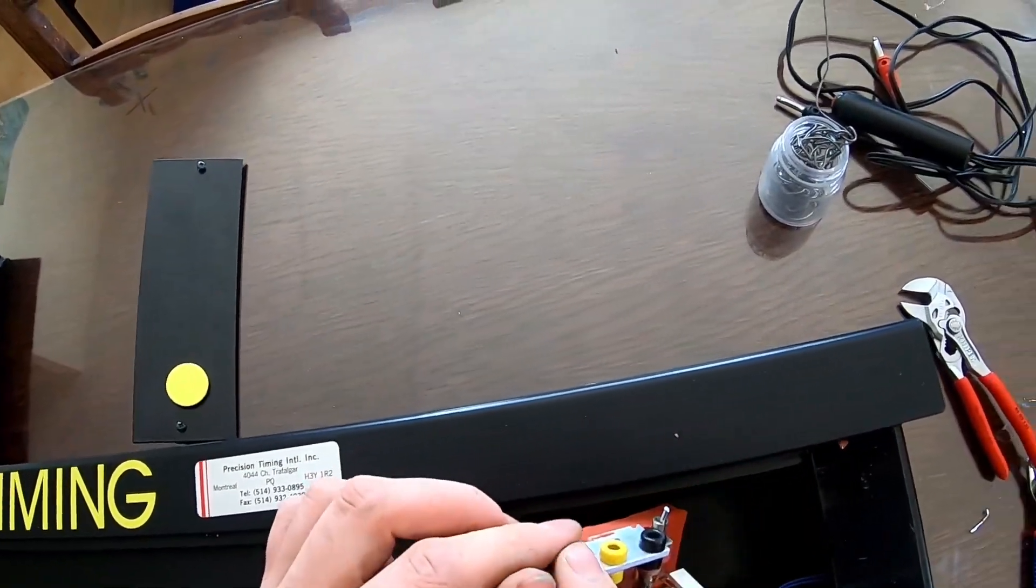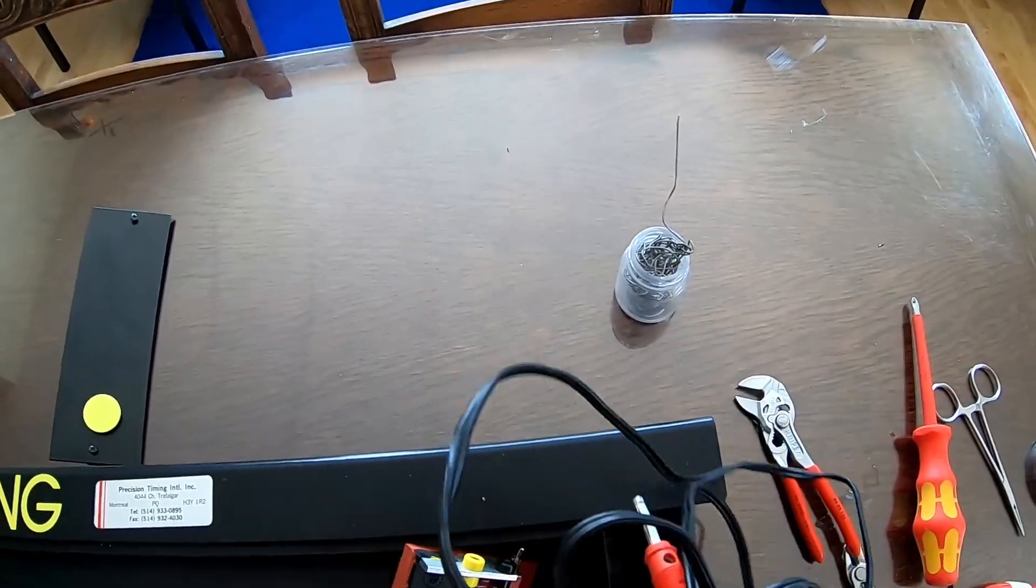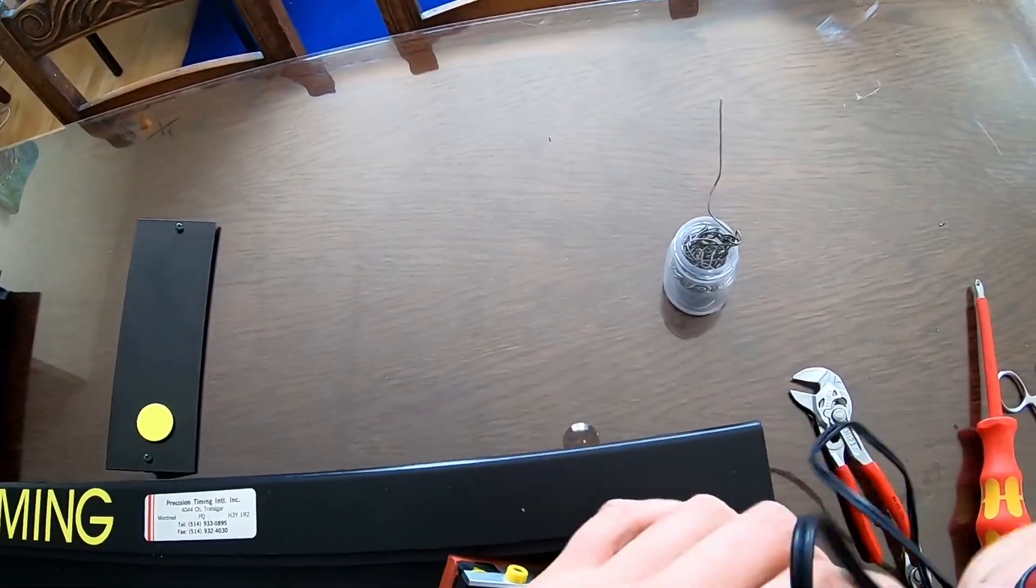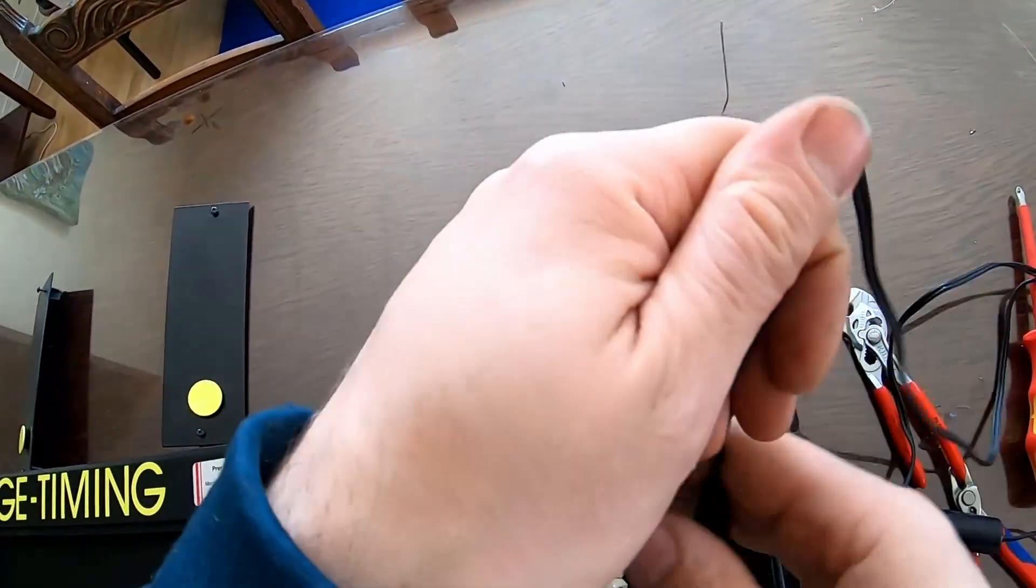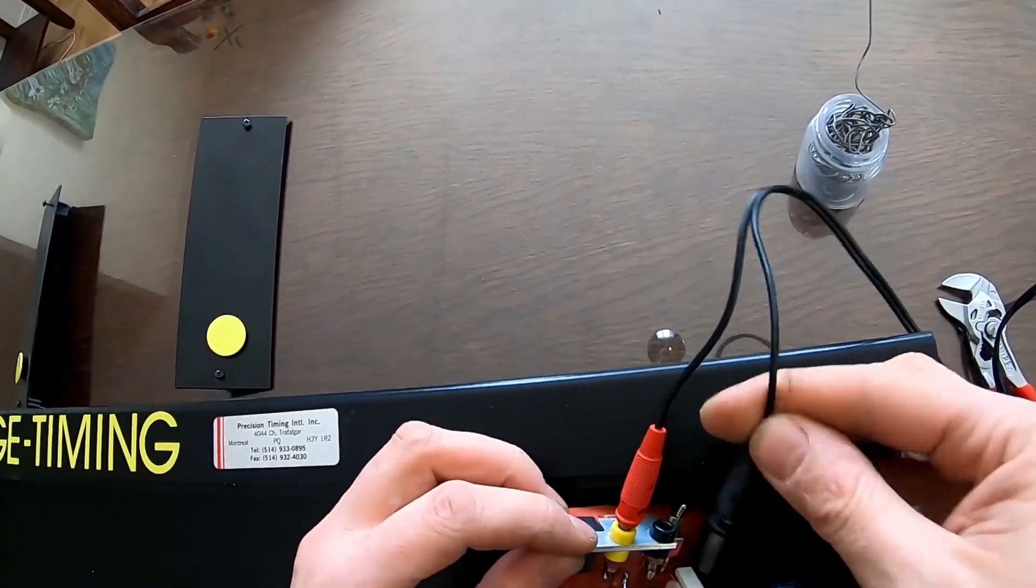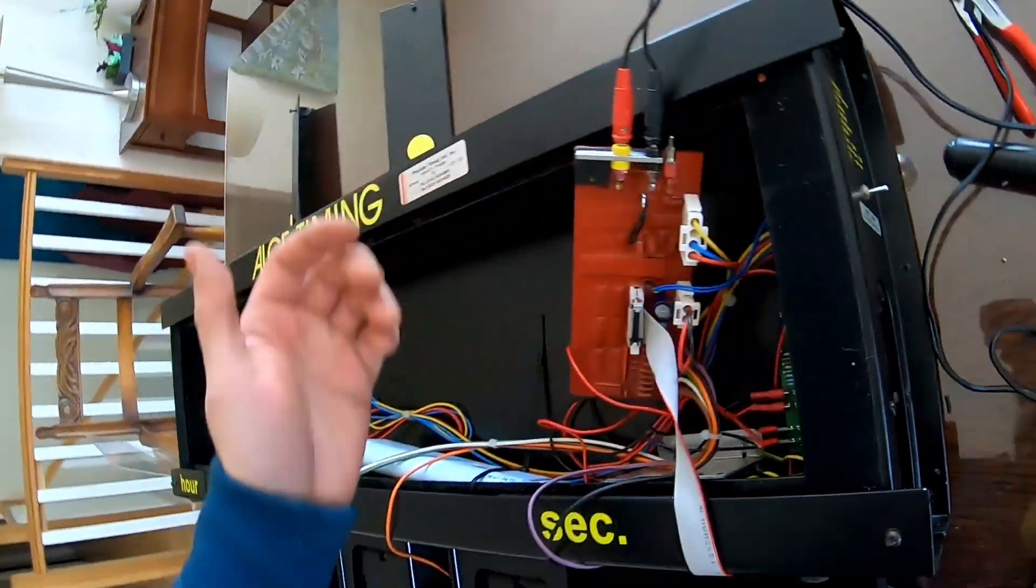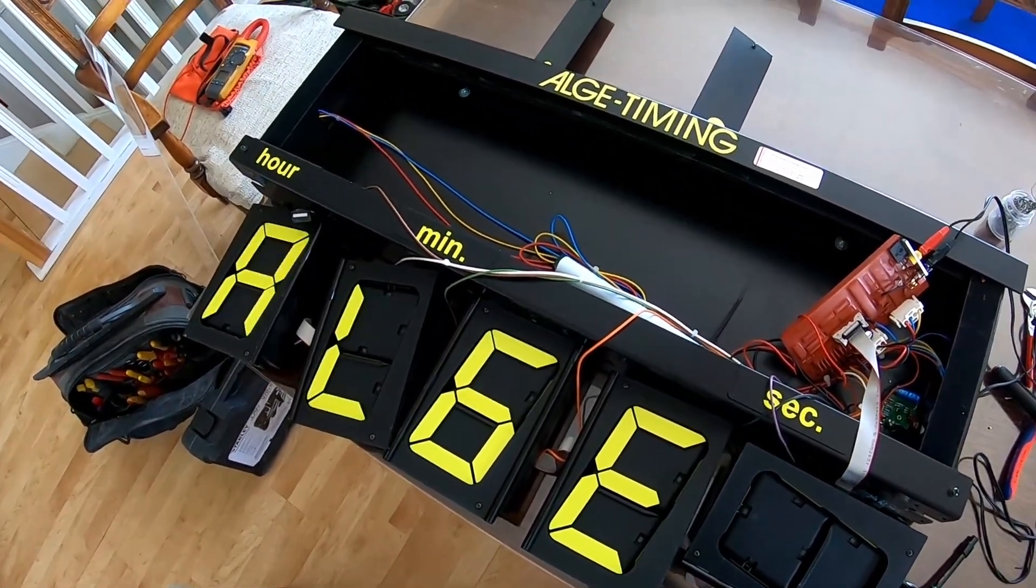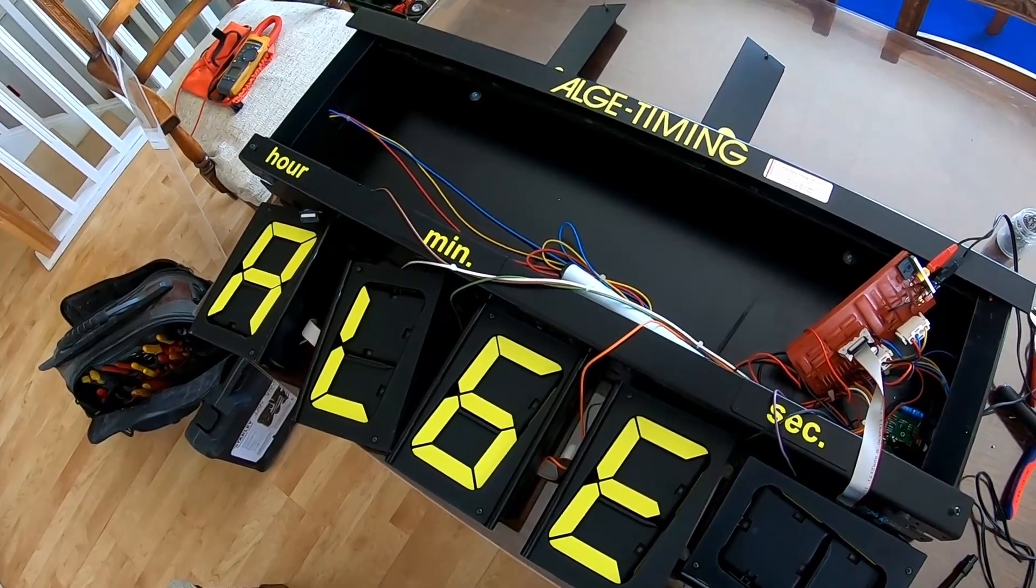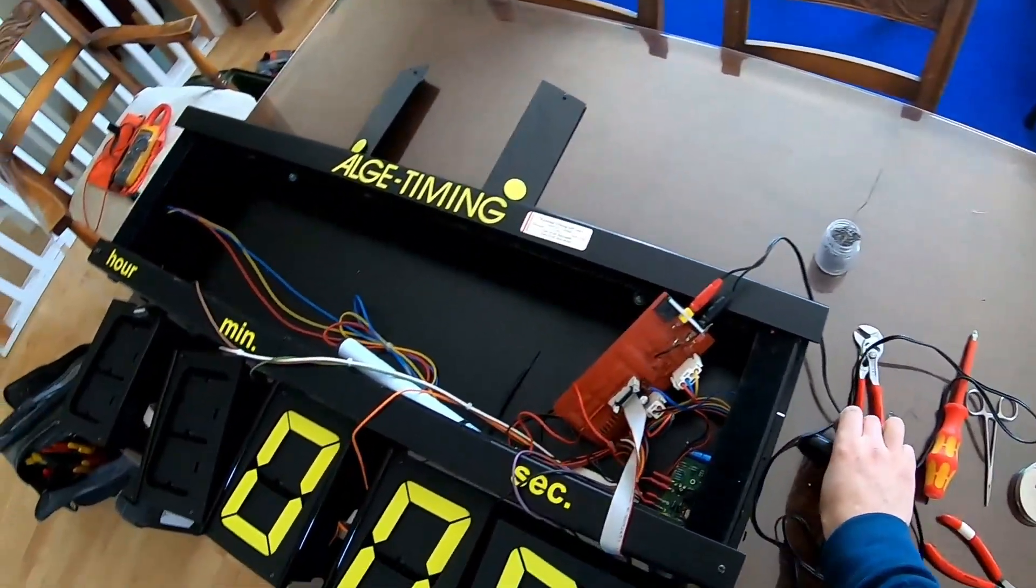All right so back over here to our repair we're gonna take our plunger. We're gonna plug that in. Actually doesn't matter which way the plunger plugs in. Okay and then we're gonna turn our unit on. Shows us the version. It says Algi. All right zero. So let's see if our plunger works.